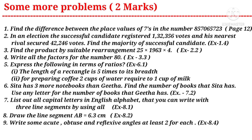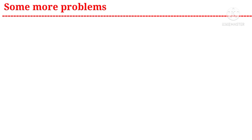Question eight: draw the line segment AB equal to 6.3 centimetres with a ruler — a question from the eighth chapter. Question nine: write some acute, obtuse, and reflexive angles, at least two for each — a question from the eighth chapter. Now let us see some more problems for practice.